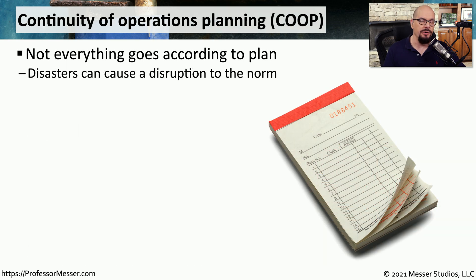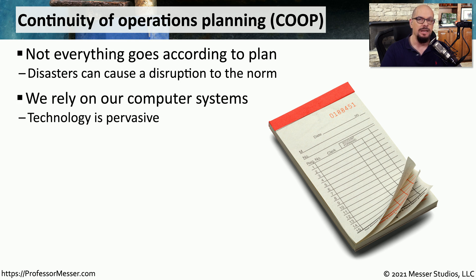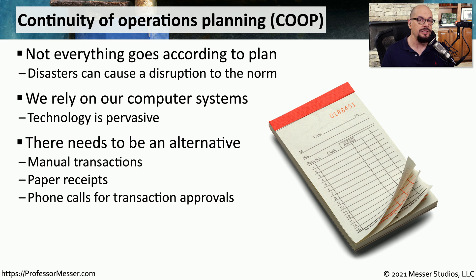When a disaster or security incident occurs, we need to find some other way to get our job done. This often requires continuity of operations planning, or COOP — something put together well before a disaster occurs so we know what to do if we don't have our normal systems in place. We rely constantly on our technology and often don't think about how we would perform our job functions without our laptop, smartphone, or other technology. There needs to be some type of alternative, such as manual transactions on paper receipts, since technology may not be available during a disaster.